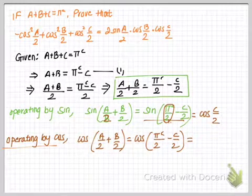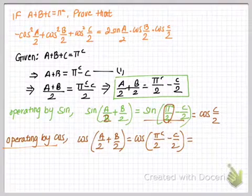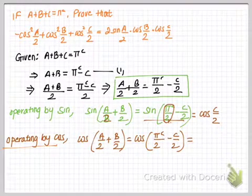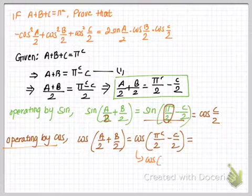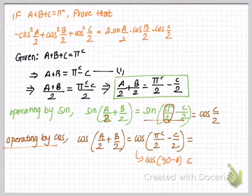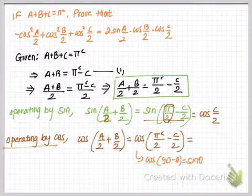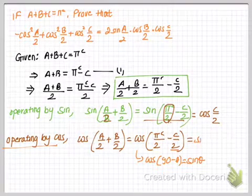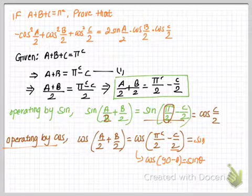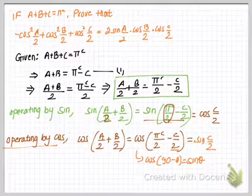On operating by cosine, we have cos(A/2 + B/2) equals cos(π/2 − C/2). Once again, cos(90° − θ) equals sin θ. So in place of θ we have C/2, and we can simply replace cos(90° − C/2) by sin(C/2).